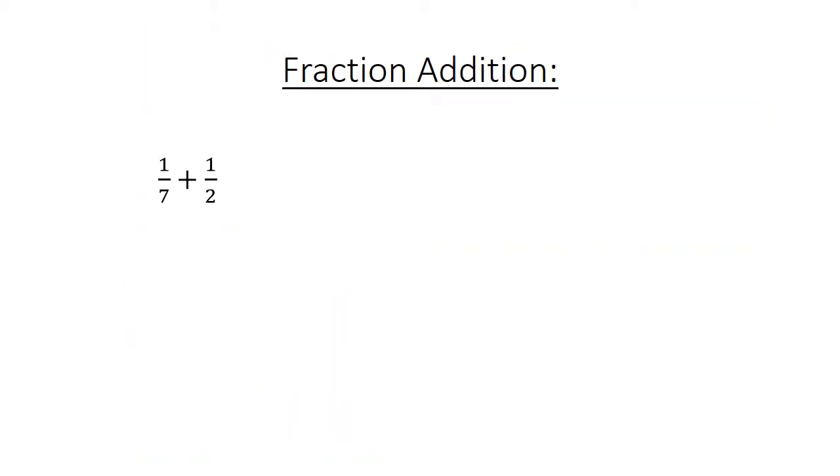Fraction addition: 1 over 7 plus 1 over 2. Find the lowest common multiple, 14. 2 over 14 plus 7 over 14 equals 9 over 14.